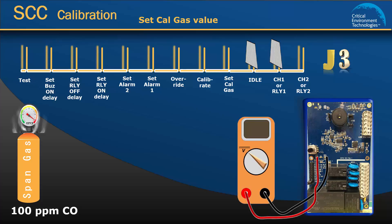To set the cal gas value, make sure one jumper is on channel 1 and move the idle jumper to set cal gas. Look at the voltmeter to confirm that the voltage is correct. In this exercise, it should show 2 volts. If it is not showing 2 volts, use the rotary encoder dial to adjust the number. To complete the set cal gas value procedure, move the cal gas jumper back to the idle position.